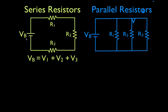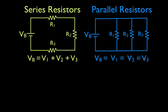For parallel resistors it's a little different — we have all equal signs. Each of these resistors one, two, and three are really connected directly to the battery. For example, between resistor number three and its connections to the battery there are no other devices that could be using any of the energy. Therefore the rule for voltage in parallel resistors is that the voltage drop across each resistor is equal to the voltage gain from the battery, so all four voltages are equal.